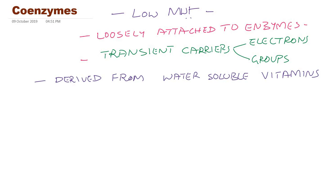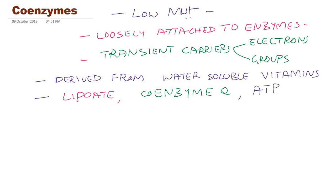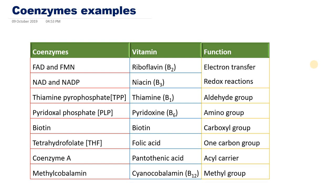Most of the coenzymes are derived from water-soluble vitamins like vitamin B complex. There are a few coenzymes not derived from water-soluble vitamins, like lipoate and coenzyme Q — we will see these cofactors in the electron transport chain. Another coenzyme other than water-soluble vitamins is ATP. In this table, I have different coenzymes which are derived from water-soluble vitamins.